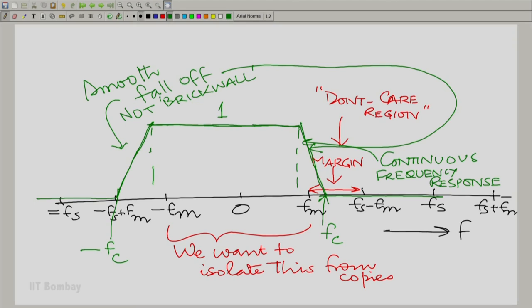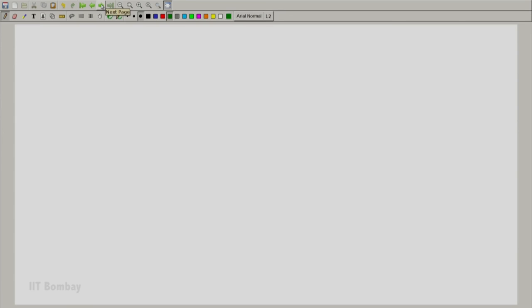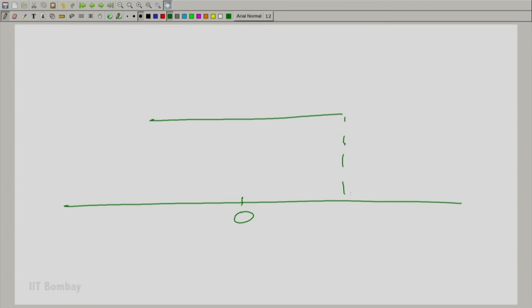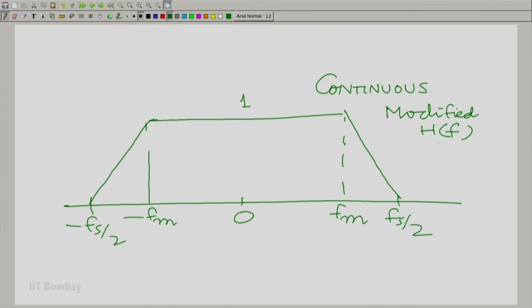How large can the margin be? The margin can be as large as the region between f_m and f_s minus f_m allows. You are guaranteed that f_c can go at least up to f_s/2, which is exactly the midpoint between f_m and f_s minus f_m. So you could have an h(f) that is flat up to f_m and drops smoothly to zero by f_s/2 — a continuous frequency response. It is a little more difficult to obtain the inverse Fourier transform of this; we will see more in the next session.